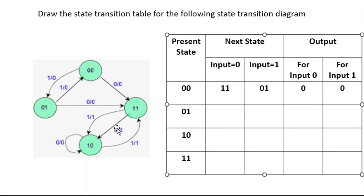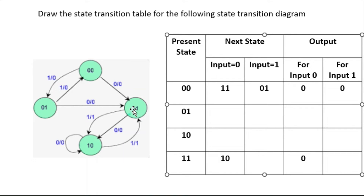So for state 1 1: for input 0, it is going to state 1 0 and the output is 0. For input 1, state 1 1 is again going to state 1 0 and the output is 1.